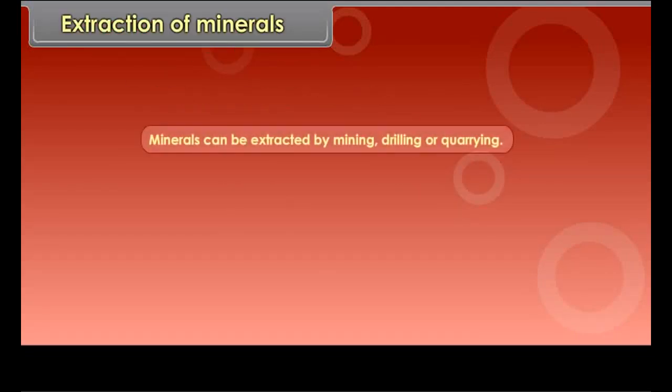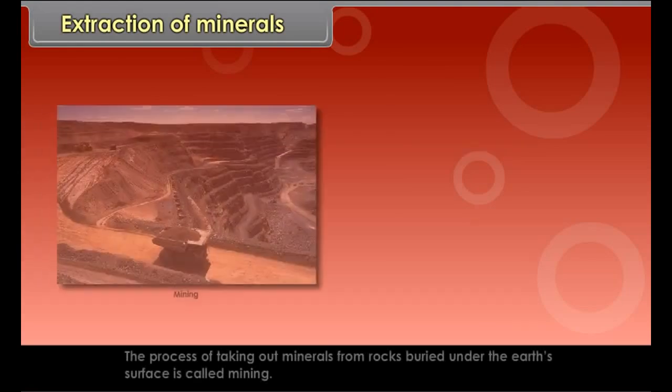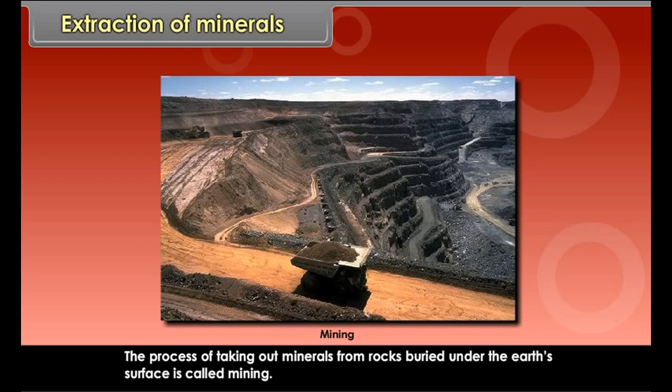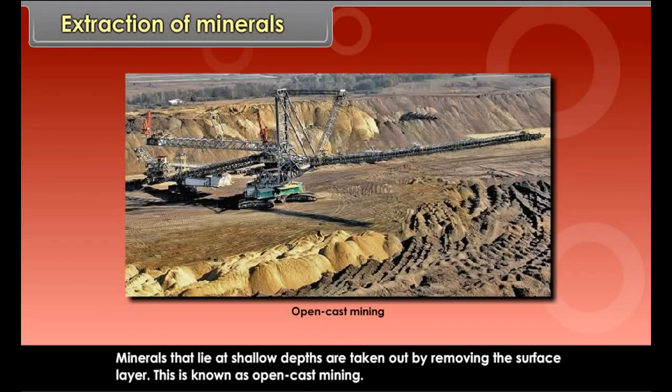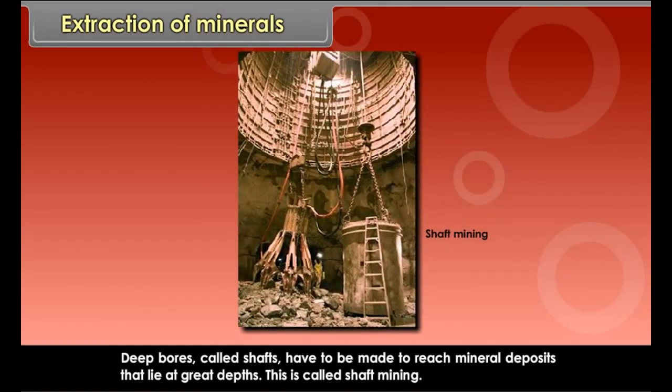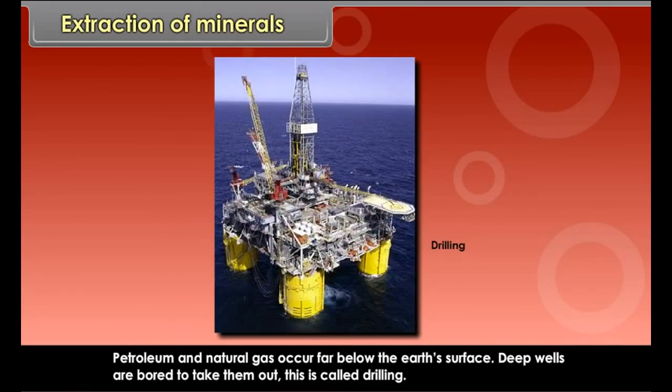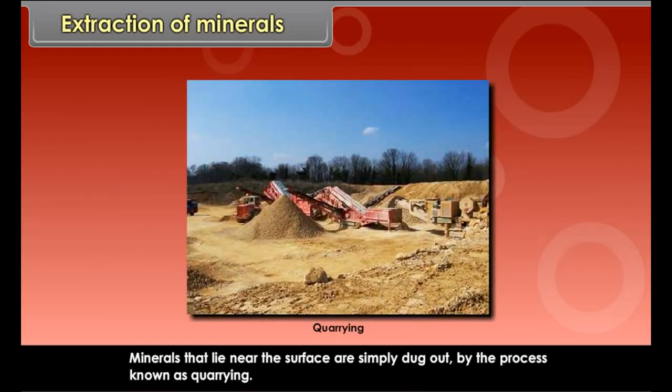Extraction of minerals. Minerals can be extracted by mining, drilling or quarrying. The process of taking out minerals from rocks buried under the earth's surface is called mining. Minerals that lie at shallow depths are taken out by removing the surface layer. This is known as open-cast mining. Deep bores called shafts have to be made to reach mineral deposits that lie at great depths. This is called shaft mining. Petroleum and natural gas occur far below the earth's surface. Deep wells are bored to take them out. This is called drilling. Minerals that lie near the surface are simply dug out by the process known as quarrying.